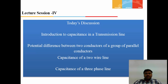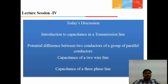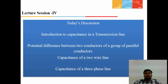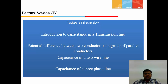The session plan of Lecture 4 is as follows. In the last class we discussed inductance and resistance of a transmission line. In this class we are going to discuss introduction to capacitance in a transmission line, how to find the potential difference between two conductors in a group of parallel conductors, capacitance of the two-wire line, and capacitance of a three-phase line. I will derive a simple base equation from which all other equations can be easily derived.